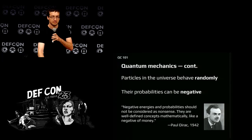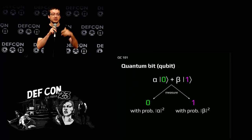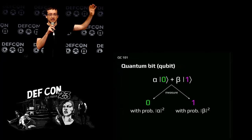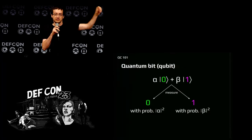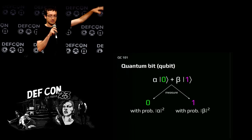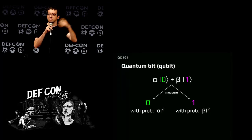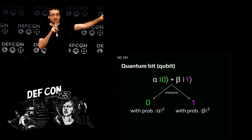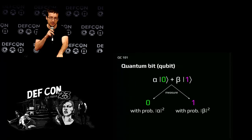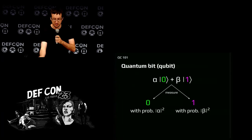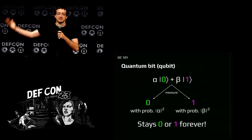You know what a classical bit is — it's either one or zero. A quantum bit can be one and zero at the same time; we call this superposition. When you haven't observed the qubit, it's in a state where if you ask it its value, it will be zero with some probability and one with another probability. The alpha and beta coefficients are called amplitudes — they can be negative or complex — and you square them to get the actual probability, a number between 0 and 1. Once you observe the qubit, it becomes a classical 0 or 1 forever; it's no longer a quantum object.